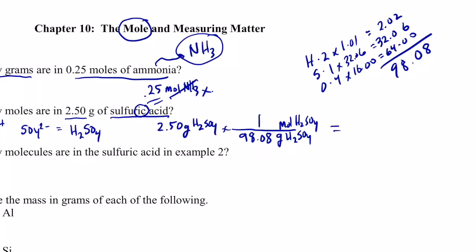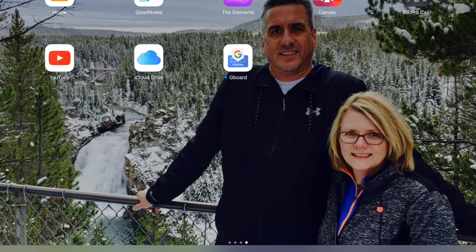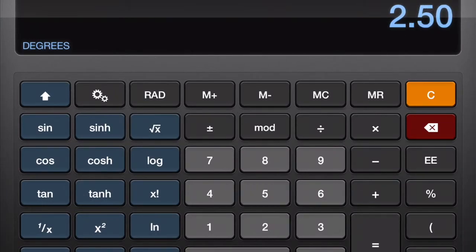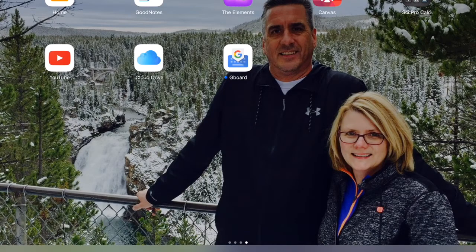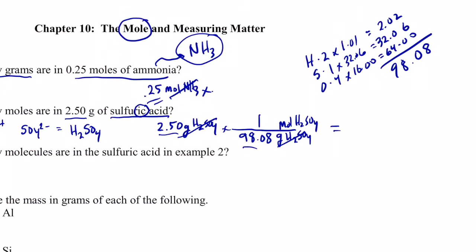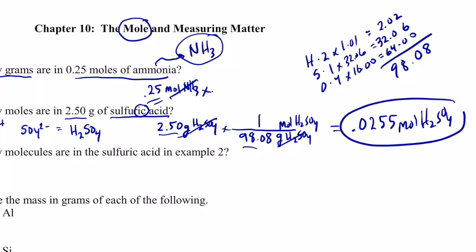Grams of sulfuric acid cancel out, leaving us with 2.50 divided by 98.08. On the calculator that gives 0.0255. To three sig figs, that is 0.0255 moles of sulfuric acid.